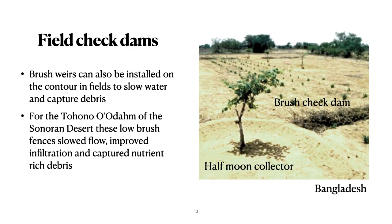We can also apply some of the things used in farm fields to catch water. Here we have brush weirs used in Bangladesh, as well as half-moon collectors — a little micro-catchment basin for trees. The Tohono O'odham people of the Sonoran Desert used low brush fences like this to slow water flow across the fields, improve infiltration of water, and also capture nutrient-rich debris.